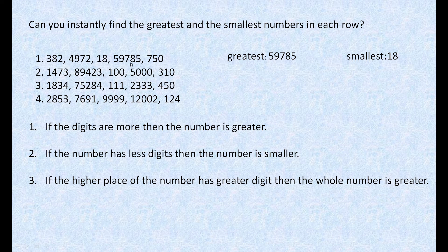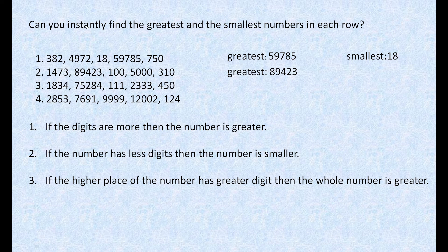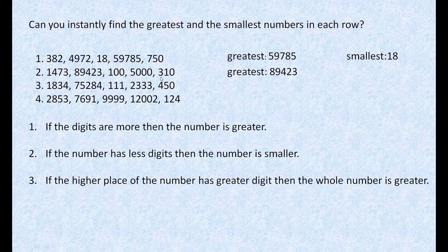Then we will go to the second example. In the second example, we have the numbers 1473, 89,423, and 105,310. As we know, 89,423 is not the greatest here — actually 105,310 has more digits. But now two numbers — 1473 and 105,310 — need to be compared for smallest. Using the third rule, comparing the highest place (100s place): 1473 has 1 and 310's highest place has 3. Since 3 is greater than 1, the smallest number is 1473.